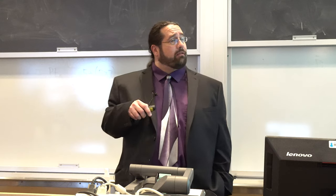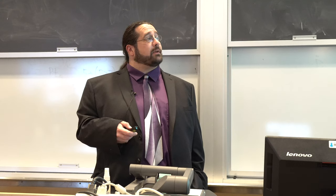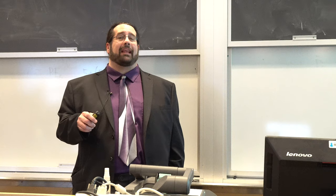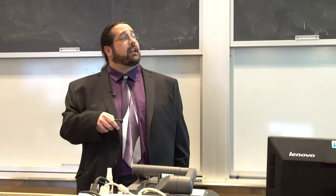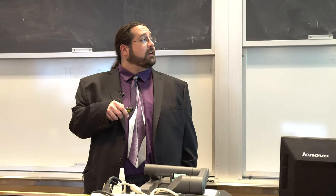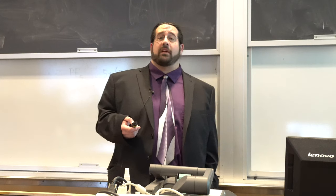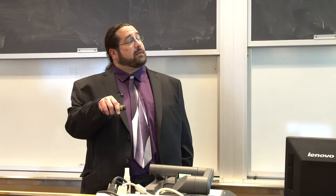This leads me into porphyrins — what I'm trying to attach to the carbon nanotube. Porphyrins are large ring-like structures with four pyrrole subunits connected by methine bridges. At these bridges — the 5, 10, 15, and 20 positions — there can be a number of substituents, and those substituents along with the possible metallated center give the porphyrin its functionality. Examples include the oxygen transporter heme, catalysts for enzymes, chlorophyll for photosynthesis, and pigments.